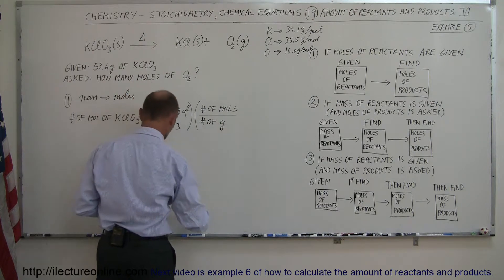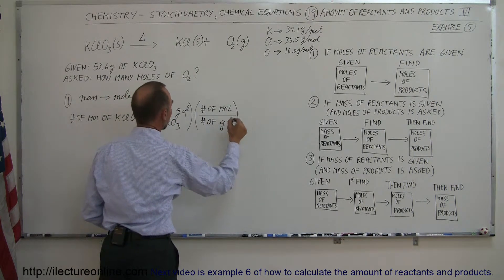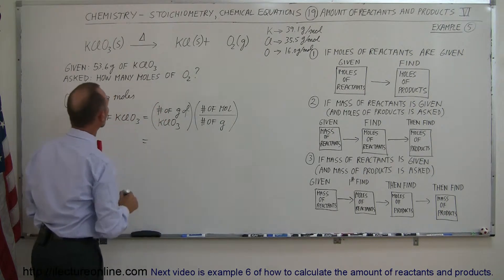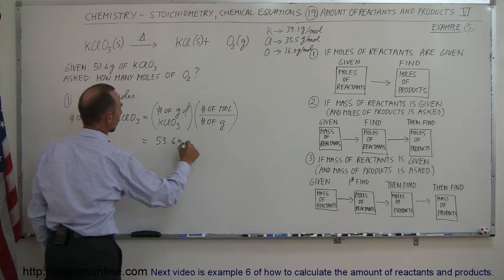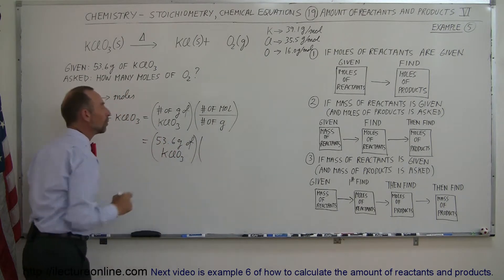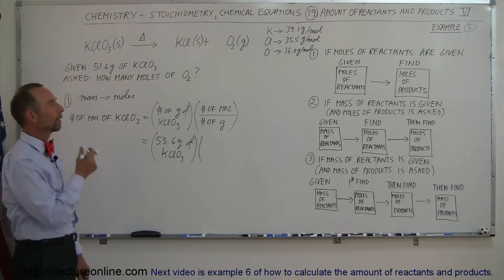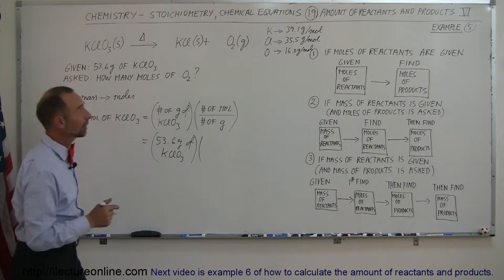And so when we plug in the numbers, we're starting out with 53.6 grams of potassium chlorate. And we're going to multiply times the number of moles per gram. So one mole gives us how many grams of that?